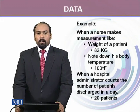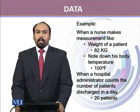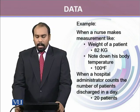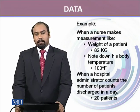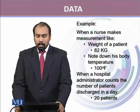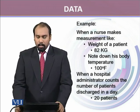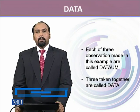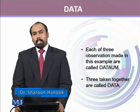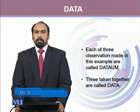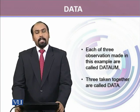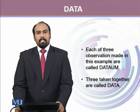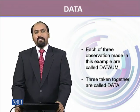Let's take a few examples. When a nurse in a hospital makes measurements like the weight of a patient — let's say 82 kilograms — and notes the body temperature, which is 100 degrees Fahrenheit, or when a hospital administrator counts the number of patients discharged in a day — let's say 20 patients — each single individual observation is called datum, whereas collectively all three are called data. Data is a plural term whereas datum is singular, so data is always a collection of facts and figures.